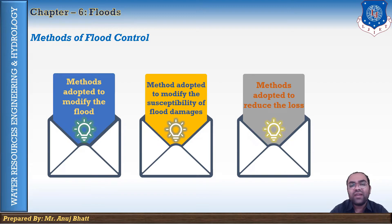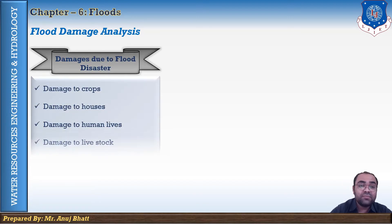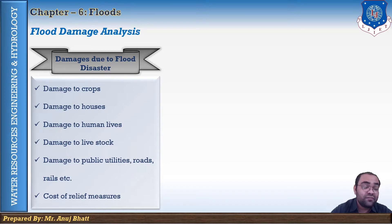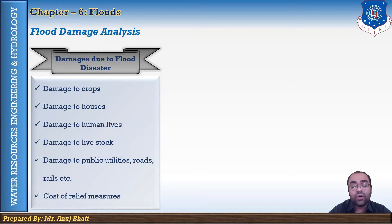Regarding flood damage analysis, the damages caused by a flood disaster include damage to crops, damage to houses, loss of human lives, damage to livestock, damage to public utilities like roads and railways, and financial costs such as the cost of relief measures. There are two types of damages: direct damage and indirect damage.